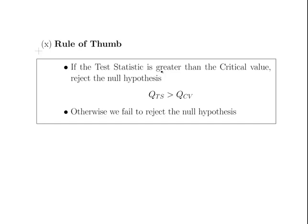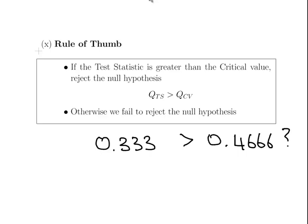We nearly have everything ready. The rule of thumb: if the test statistic is greater than the critical value, reject the null hypothesis. In our case, our test statistic was 0.333. Is that greater than 0.466? The answer is no. So we fail to reject the null hypothesis — there is not enough evidence to say that there is an outlier present in that dataset.